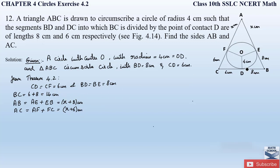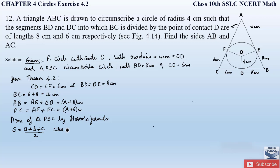Now we will find the area of the triangle using two methods. First, Heron's formula, then the normal formula: half × base × height. According to Heron's formula, S = (a + b + c) / 2, and area = √(S(S−a)(S−b)(S−c)), where a, b, c are the three sides of the triangle.